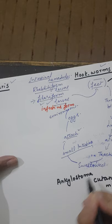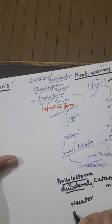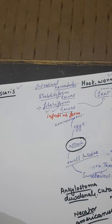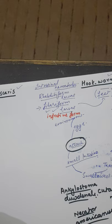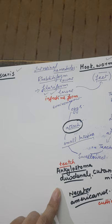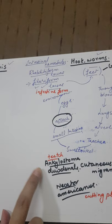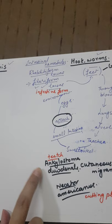The hookworms have two species: Ancylostoma duodenale and Necator americanus. These are commonly called hookworms. Ancylostoma duodenale is called the old world hookworm, while Necator americanus is called the new world hookworm — prevalent in the Americas. In our region, Ancylostoma duodenale is more common.